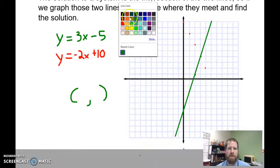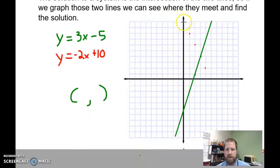And my second line should be about there. I can see my intersection is at 3, 4, so that's my solution.